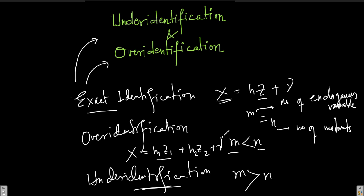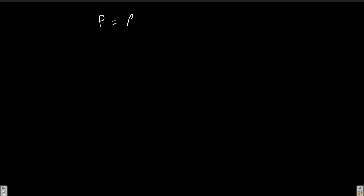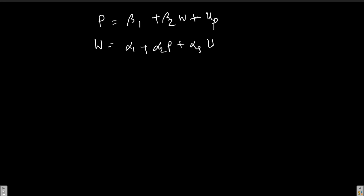Let us elaborate with an example we have already seen. Think of the example where the price rate equals β₁ plus β₂ times wage rate plus error term uₚ. We also wrote a wage rate equation: wage rate equals α₁ plus α₂ times price rate plus α₃ times unemployment rate plus error term u_w. So p and w are basically endogenous variables in these two equations.